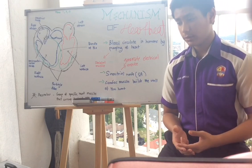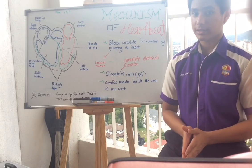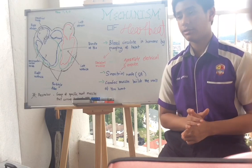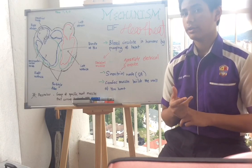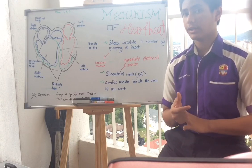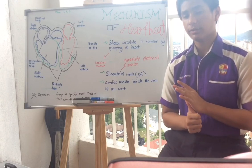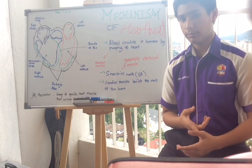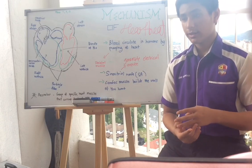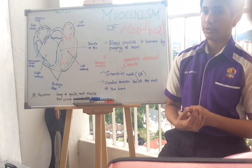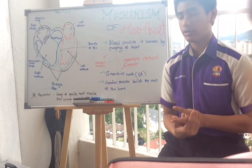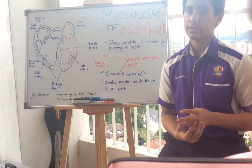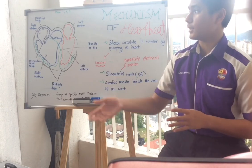In Form 3 we learned seven labeled parts of the heart: right atrium, left atrium, right ventricle, left ventricle, semilunar valve, tricuspid valve, and bicuspid valve. Now we will be learning four new parts: the sinoatrial node, atrioventricular node, bundle of His, and Purkinje fibers.